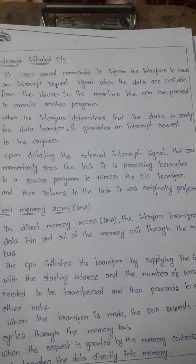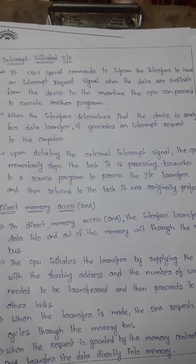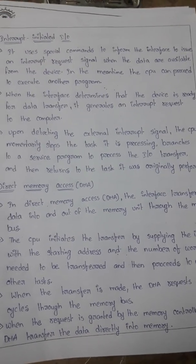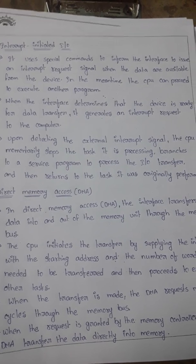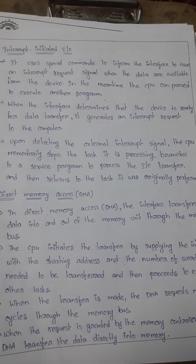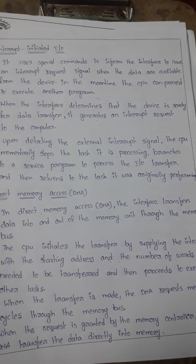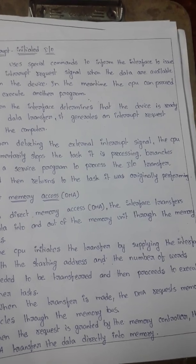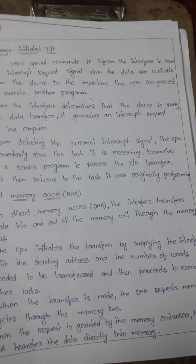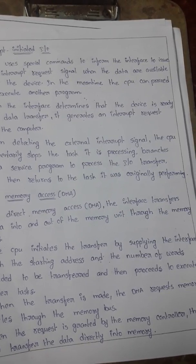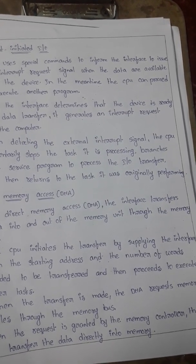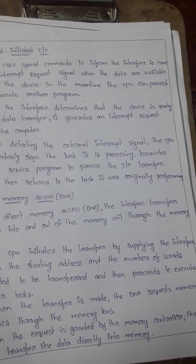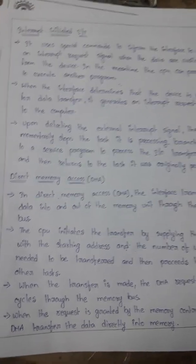After servicing the I/O transfer, the CPU returns back to the work it was originally performing. In interrupt-initiated I/O, the CPU does not need to wait needlessly for the data transfer. When the data is available, the interface sends the interrupt signal to the CPU. Meantime, the CPU can do some useful work. It then immediately stops that work and comes back to service the I/O request. After completion of the I/O transfer, there is no wastage of CPU cycles.